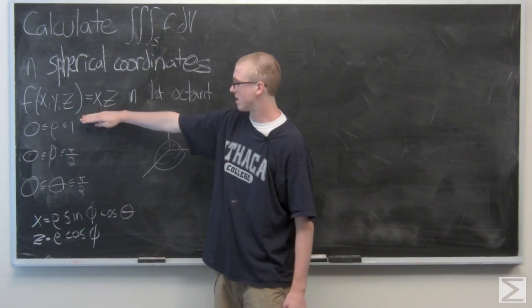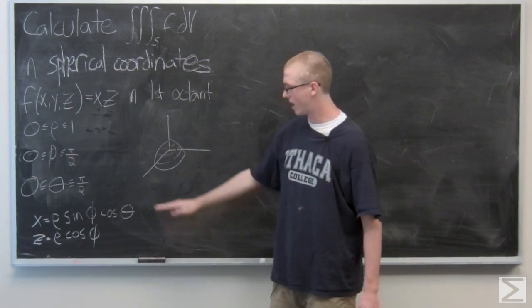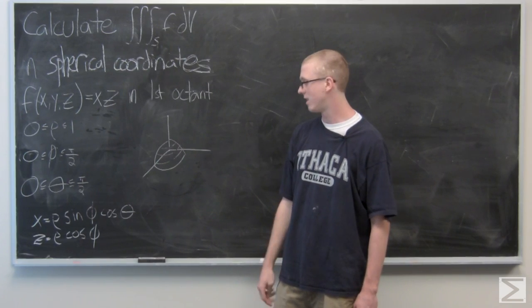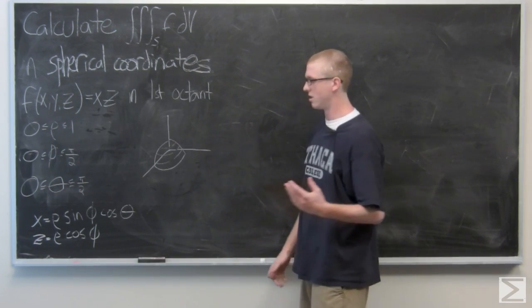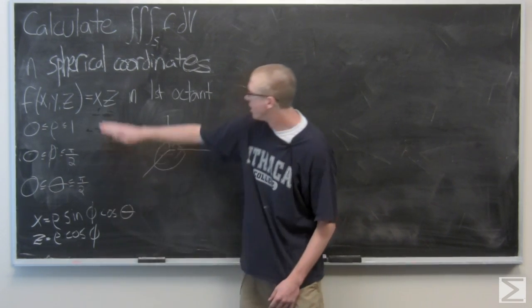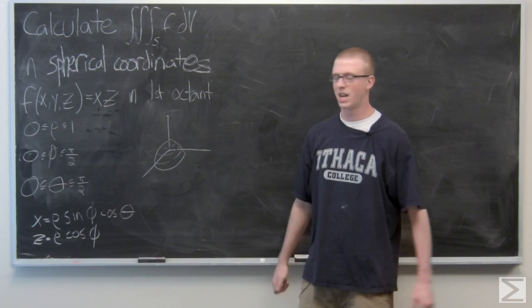We need to change this x, z. As you know, x equals rho sine phi cosine theta, and z equals rho cosine phi. So all we need to do is just plug these two in up here and evaluate that in spherical coordinates.